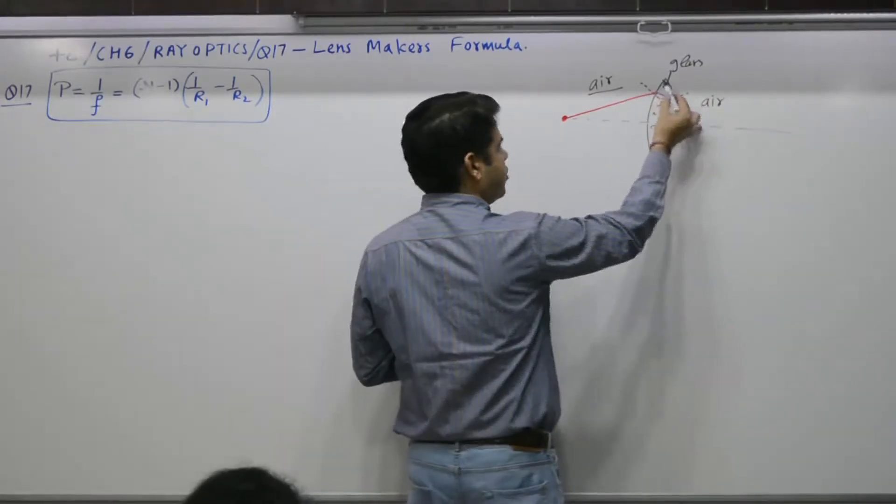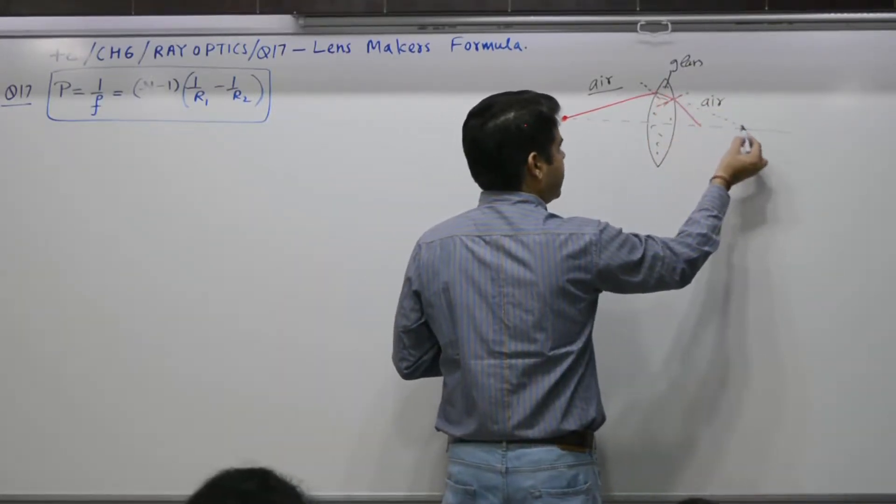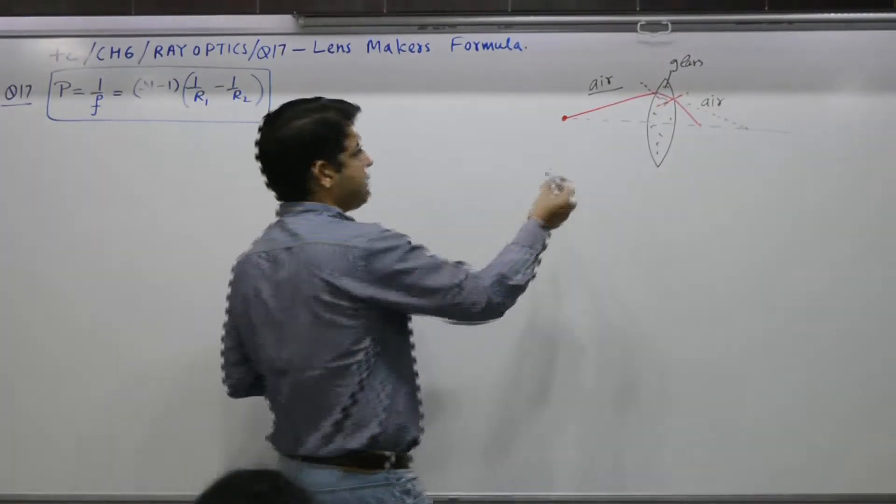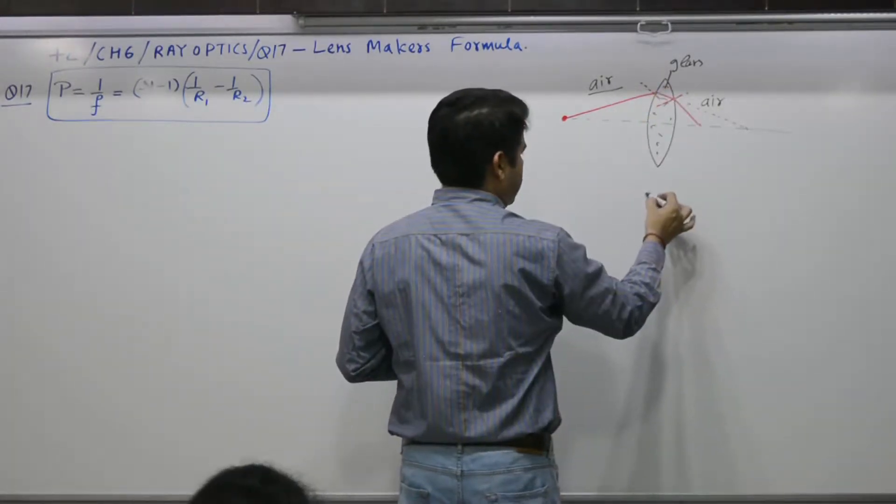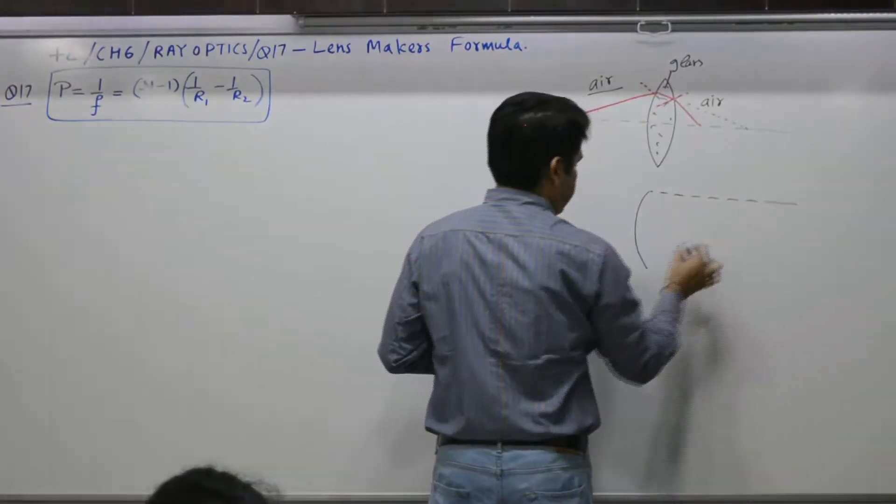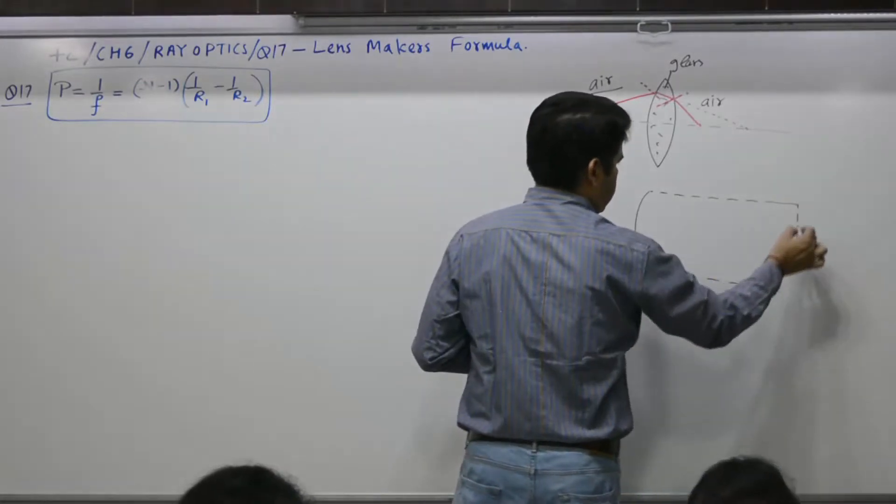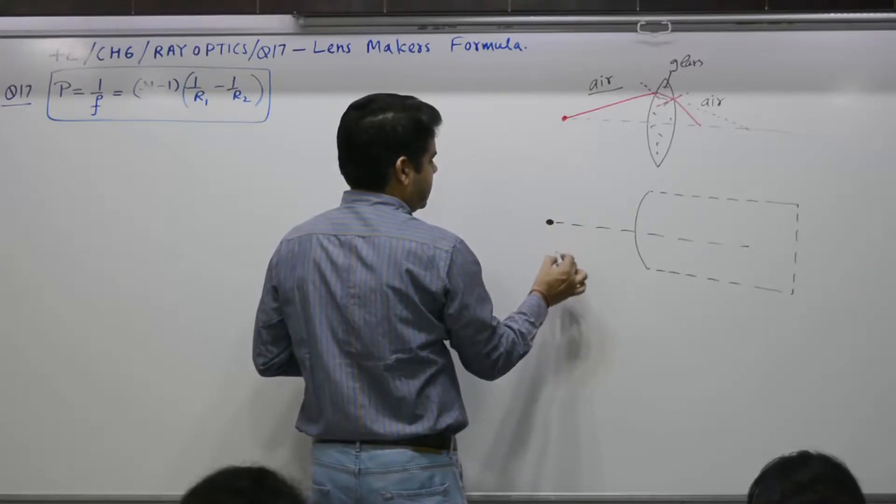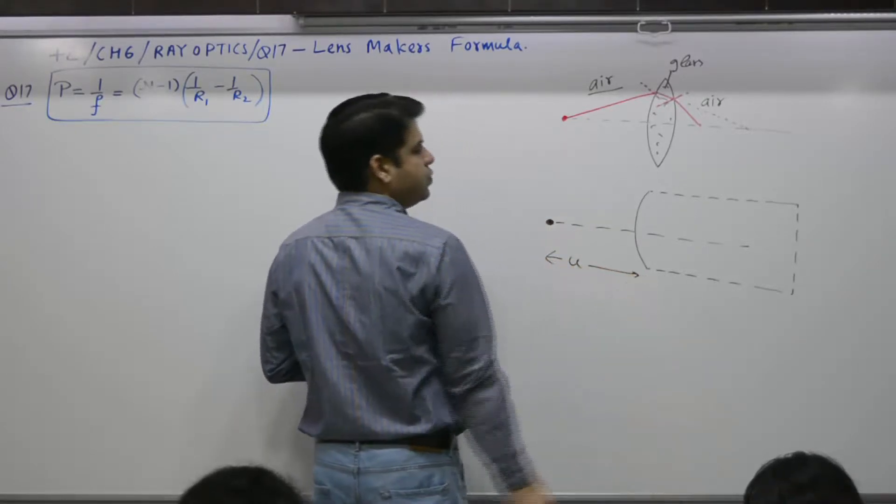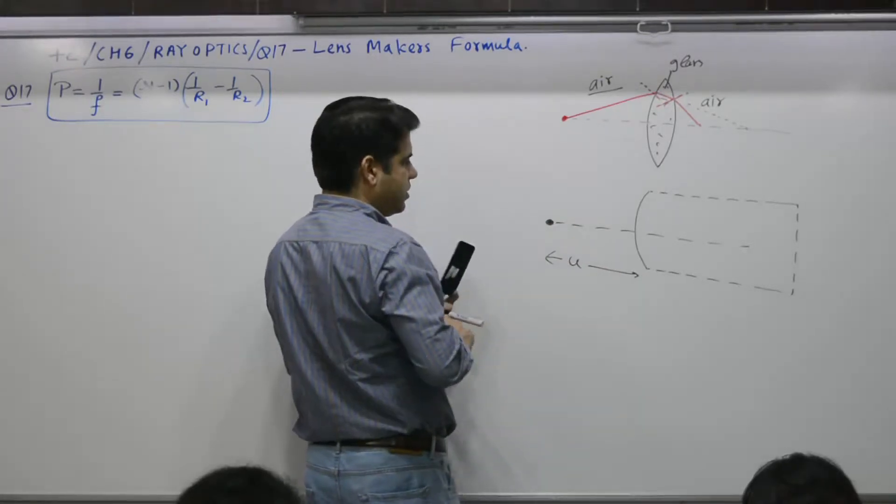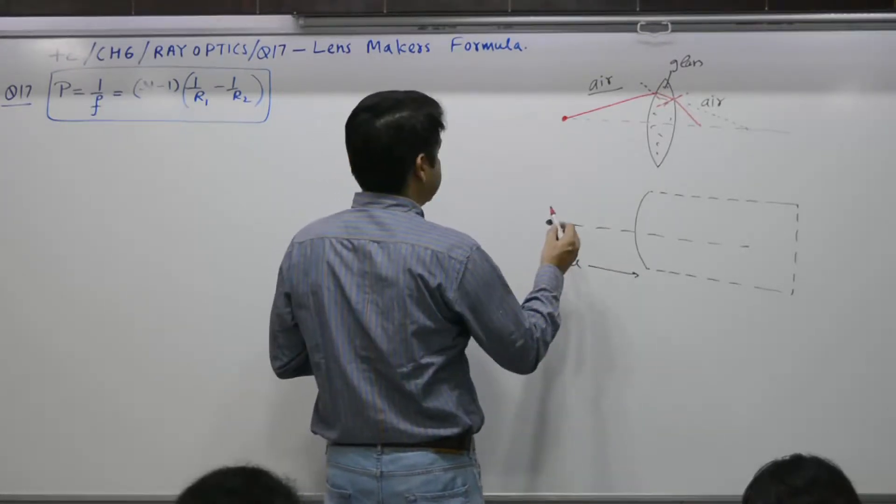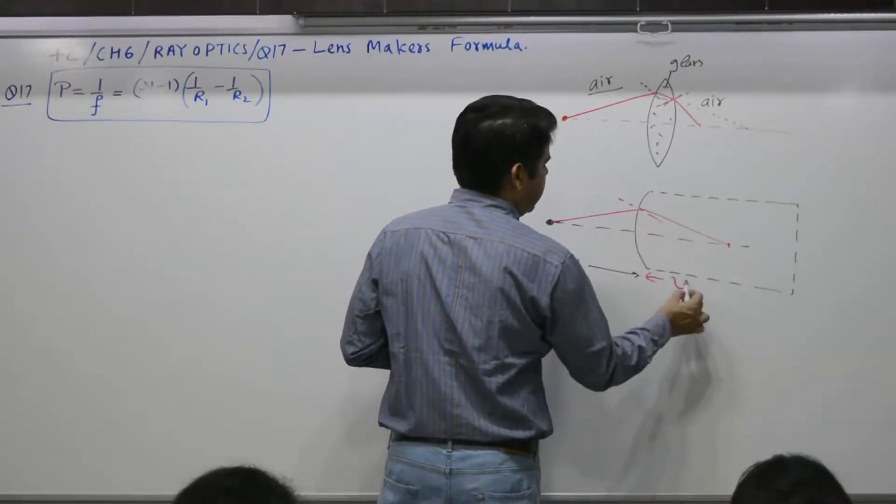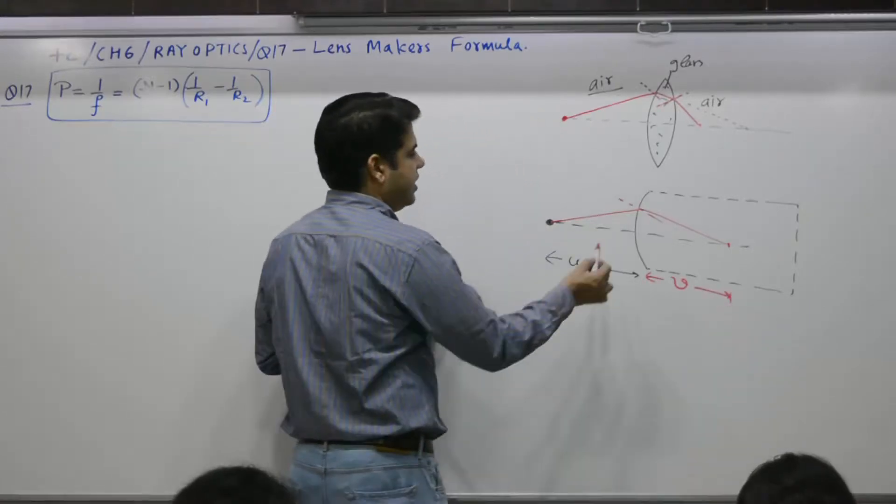In case the second surface is not there, the ray will reach to this point. Agreed or not? It is equivalent to first phase, step 1. Just concluded. Object, yes, is at U. The ray moves, covered in previous question, question number 16, ray moves to A, then it bends towards, there is image formation, at V, radius of curvature.